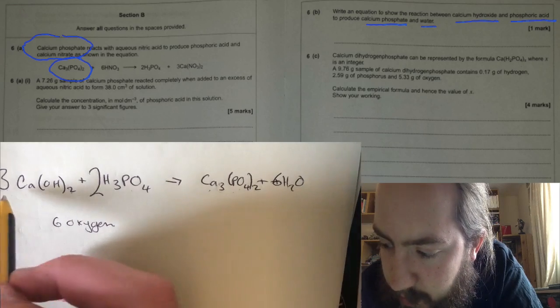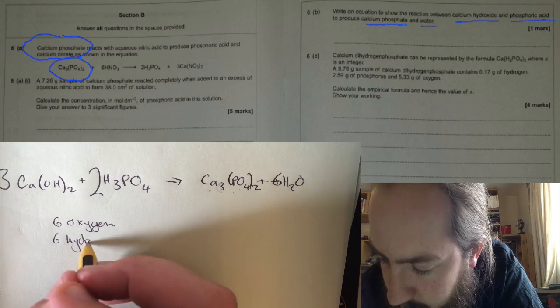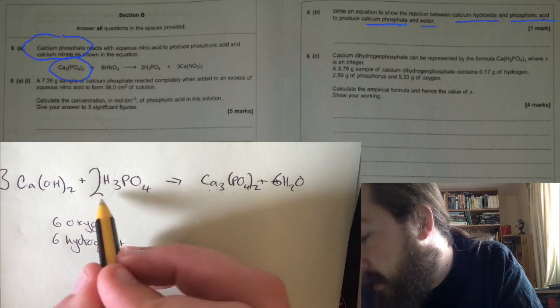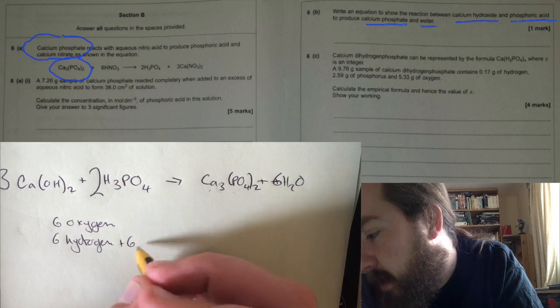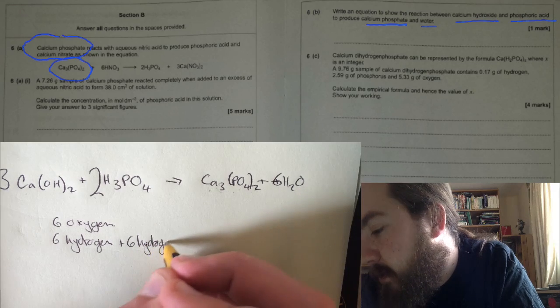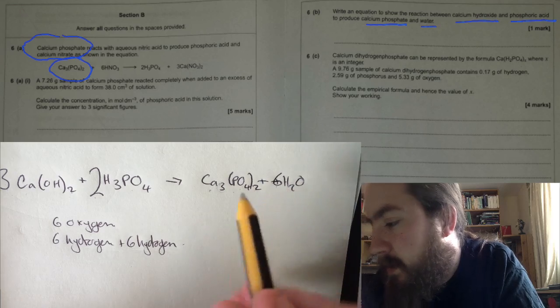How many hydrogens we've got on this side: we've got 3 times 2, that's six hydrogen, plus in the phosphoric acid we've got 2 times 3, so we've got another six hydrogen here. So we should have 12 on both sides. On the products we've got 6 times 2, that's 12, so that's balanced.